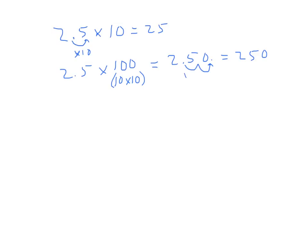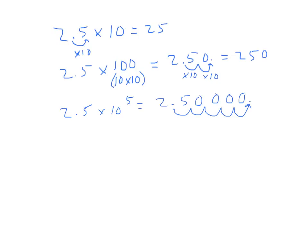So in that example, we multiply by 10 and then multiply by 10 again. And continuing with this, if we do 2.5 times 10 to the 5th power, that just means that we'll take this number 2.5 and multiply by 10 five times. So the decimal will end up there. We have to add in what we call placeholder zeros that keep these numbers 2 and 5 in the correct place.